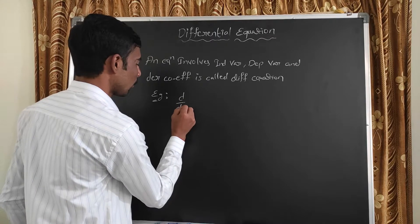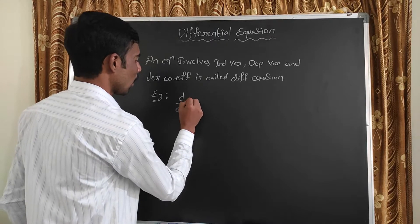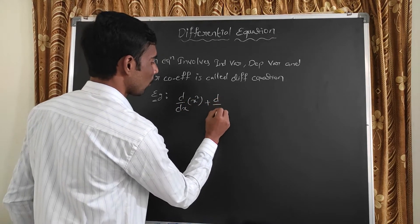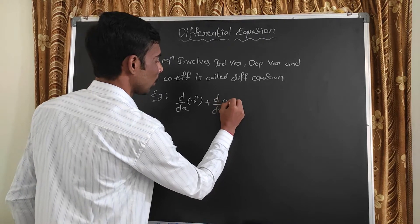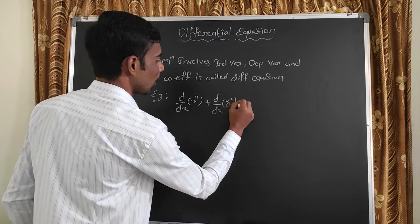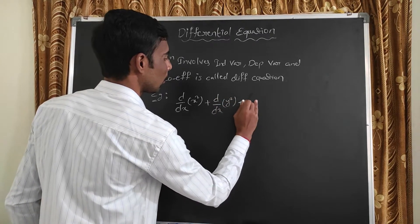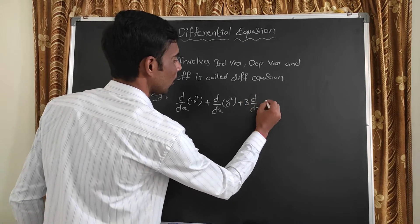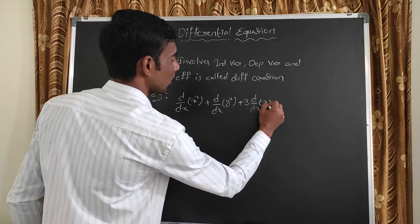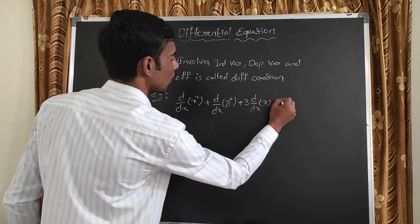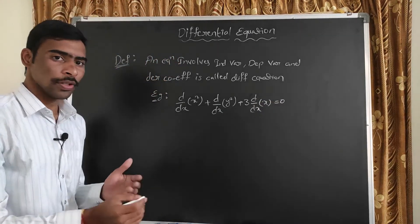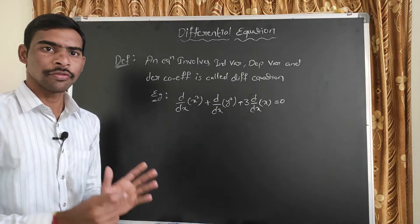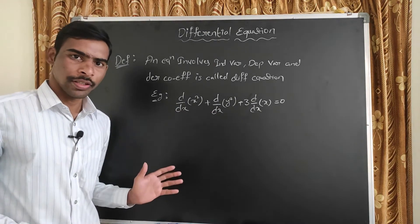Example: d/dx of x² plus d/dx of y² plus 3 into d/dx of x is equal to 0. This is a differential equation.